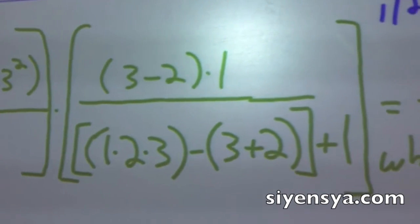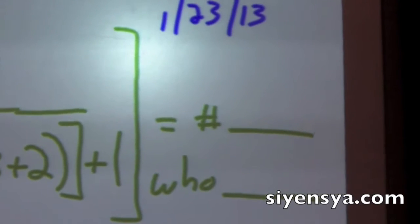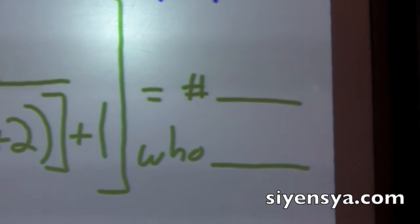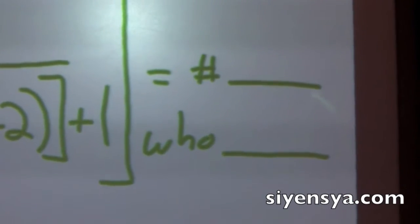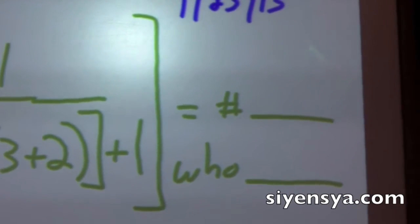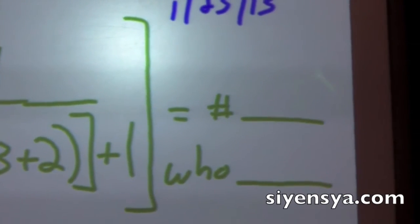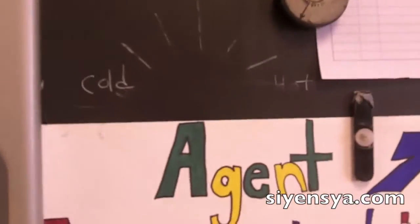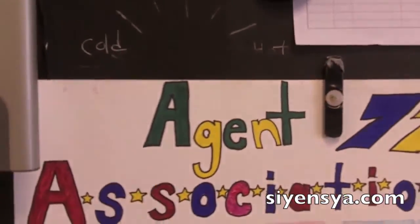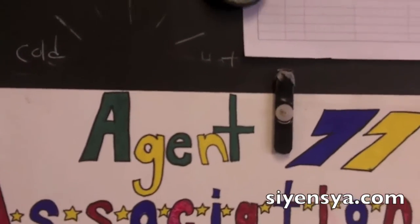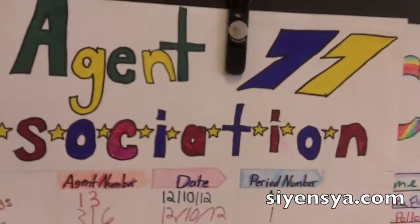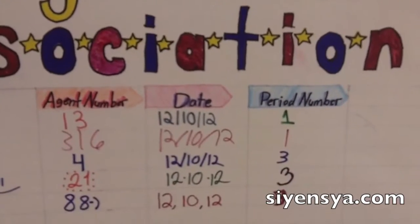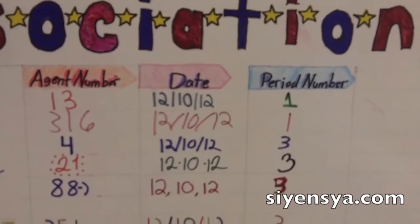The final answer is a number, but more than that, the number is also related to who. Who refers to one of my agents in my class. And over here, I have the Agent 77 Association. And here are my agents. Just looking at the agent numbers, you can see that these are my secret agents in my class.